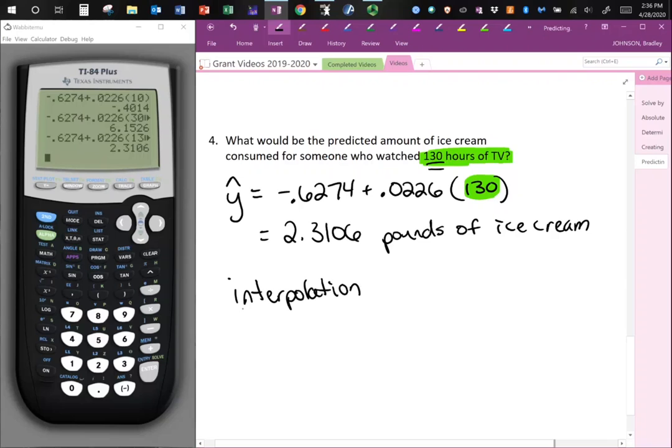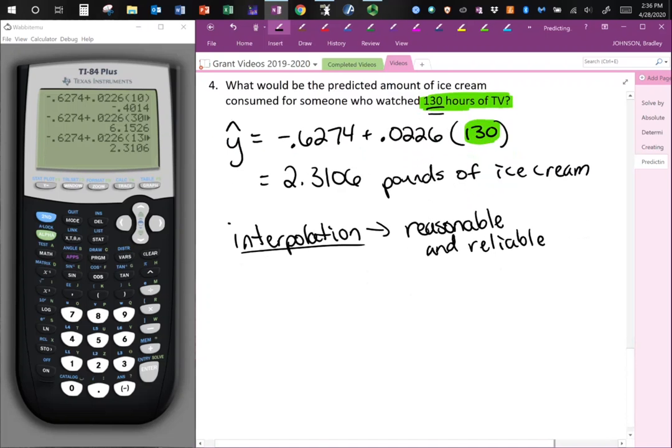And because we've used interpolation, we know that this answer was reasonable. And it will be a reliable prediction. Because 130 is within the observed values. So we know that our equation is reliable within those observed values. Thank you for watching.